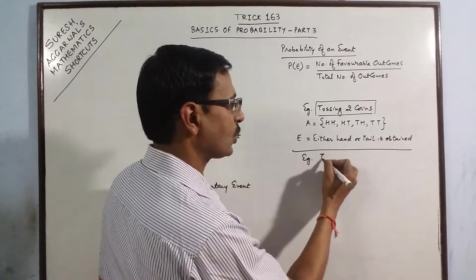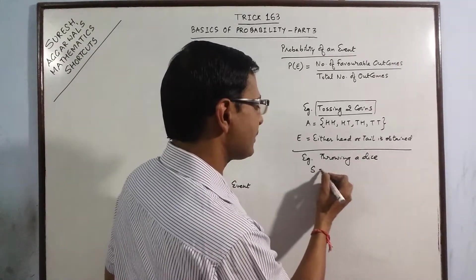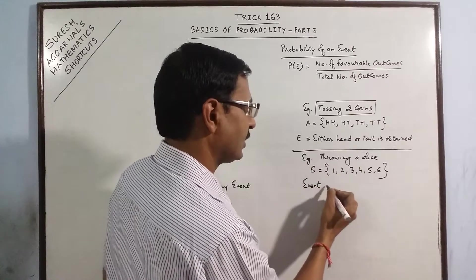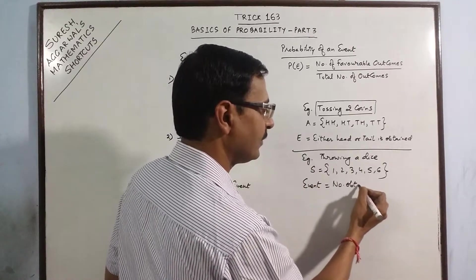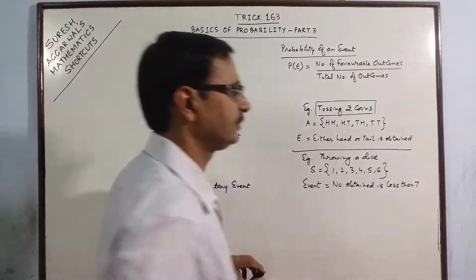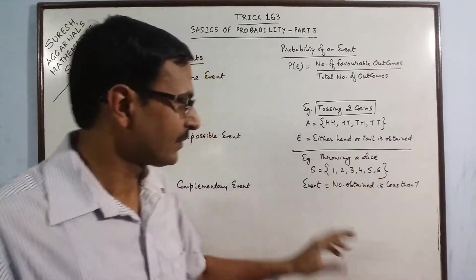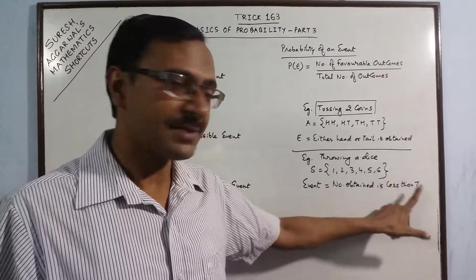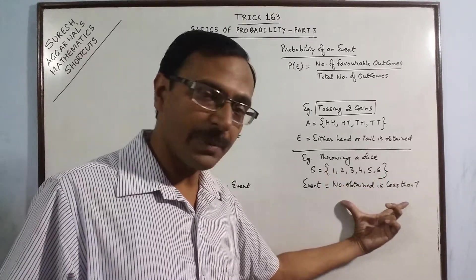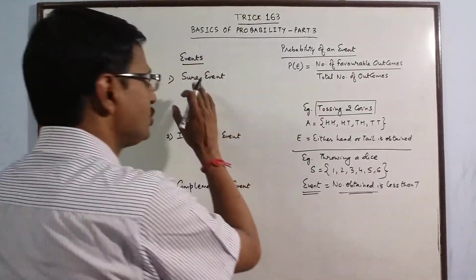To understand this better, consider throwing a dice. This is an experiment of throwing a dice. You have the sample space 1, 2, 3, 4, 5, 6, and there is an event that the number obtained is less than 7. In the sample space, I have 6 numbers 1 to 6, and all of them are less than 7. So every outcome in this sample space is satisfying this statement, and this event will be called a sure event.